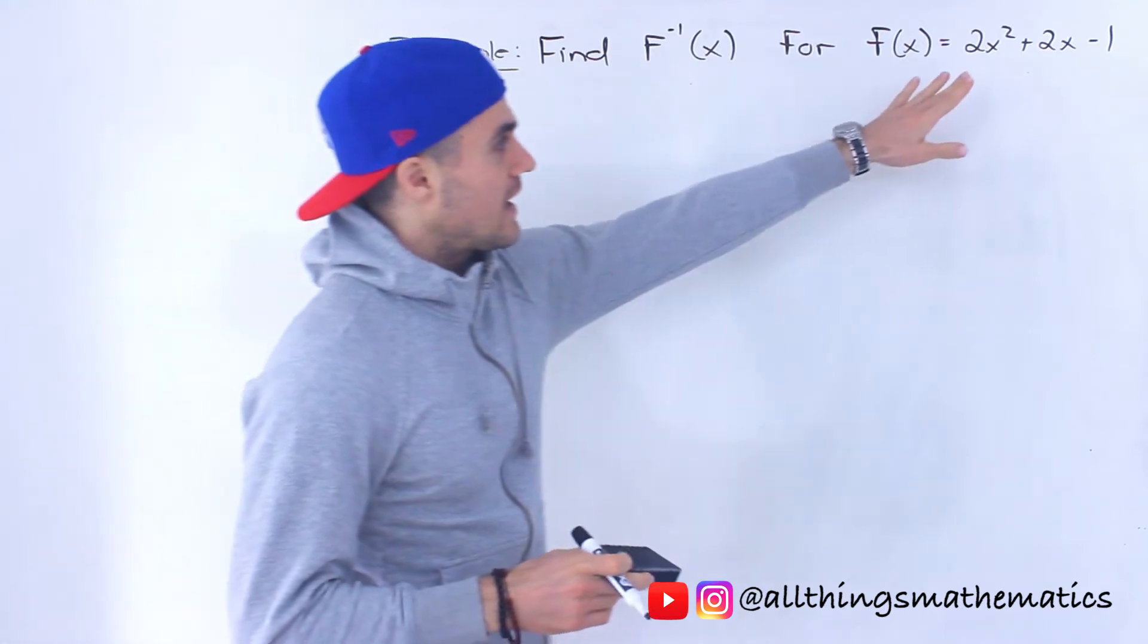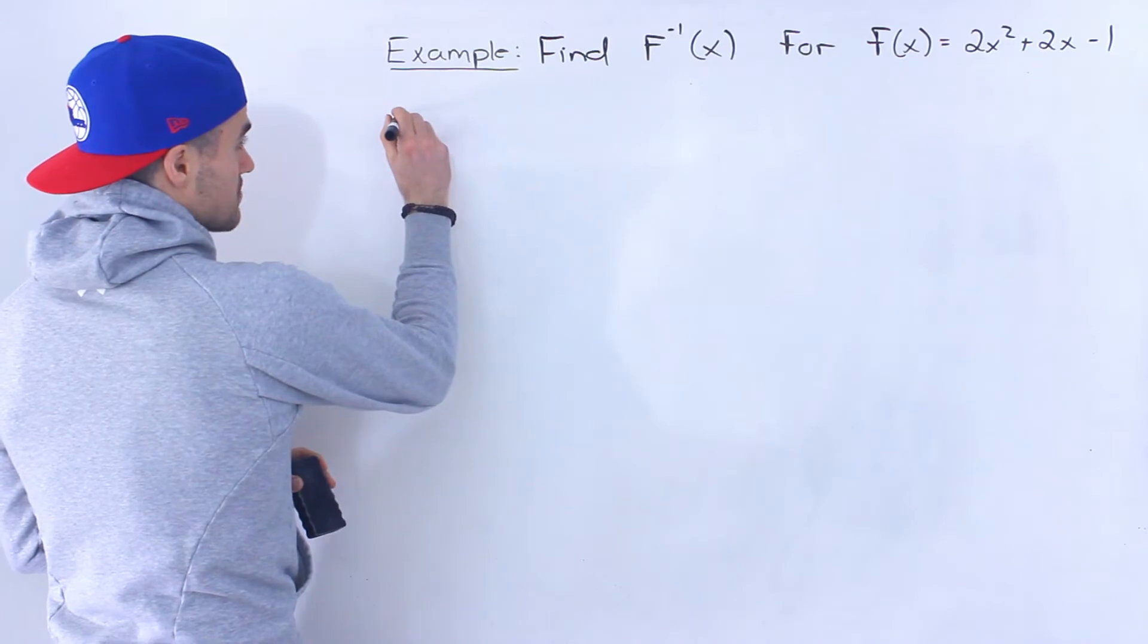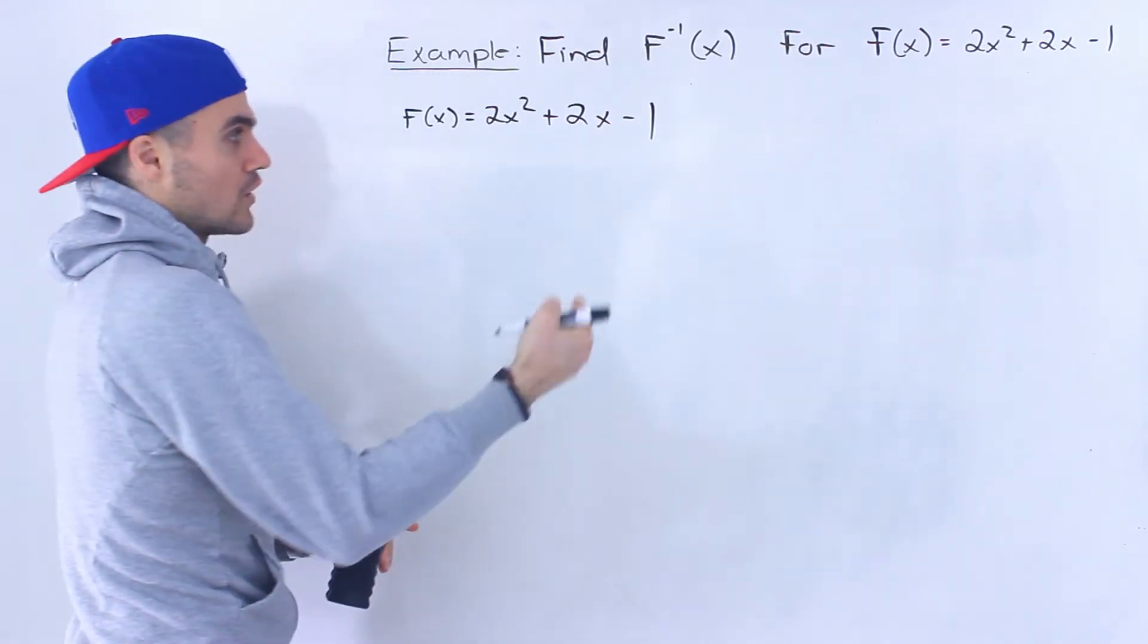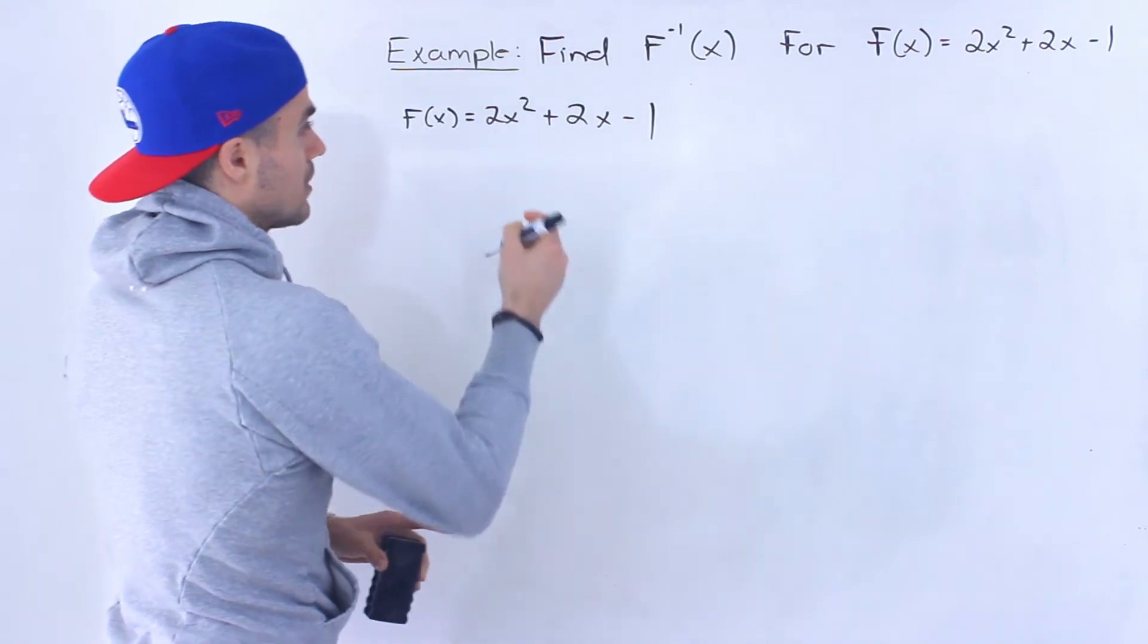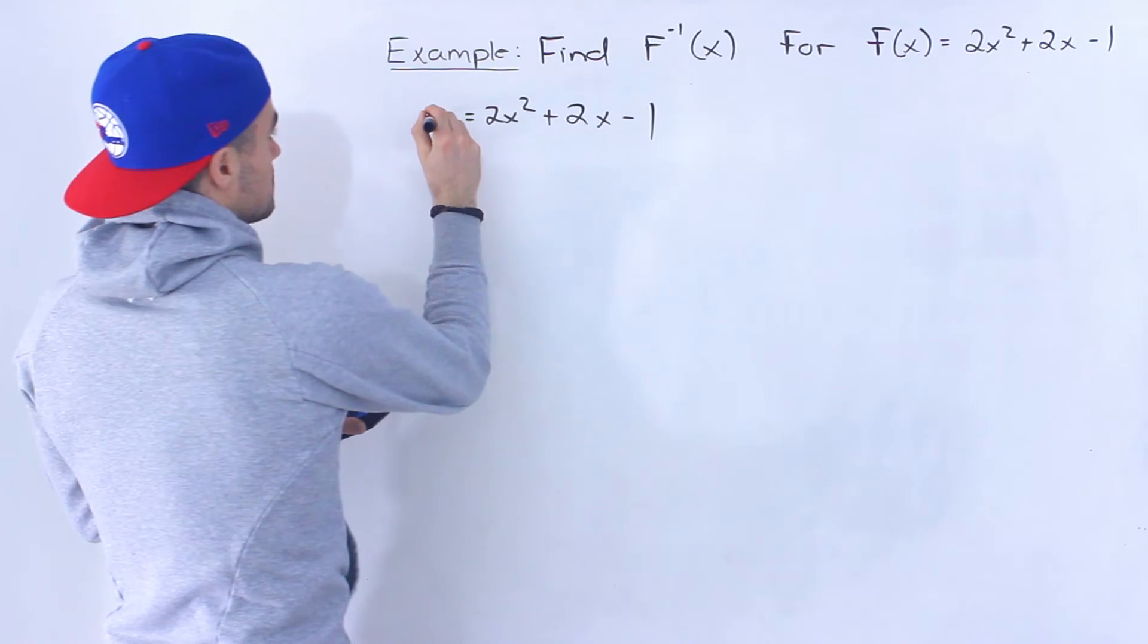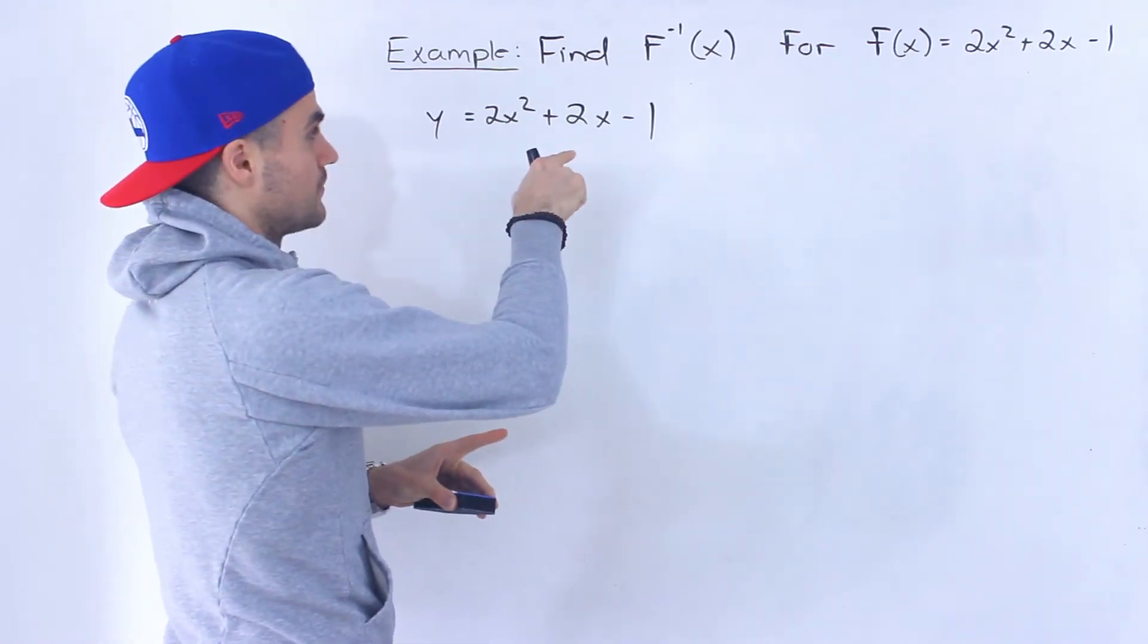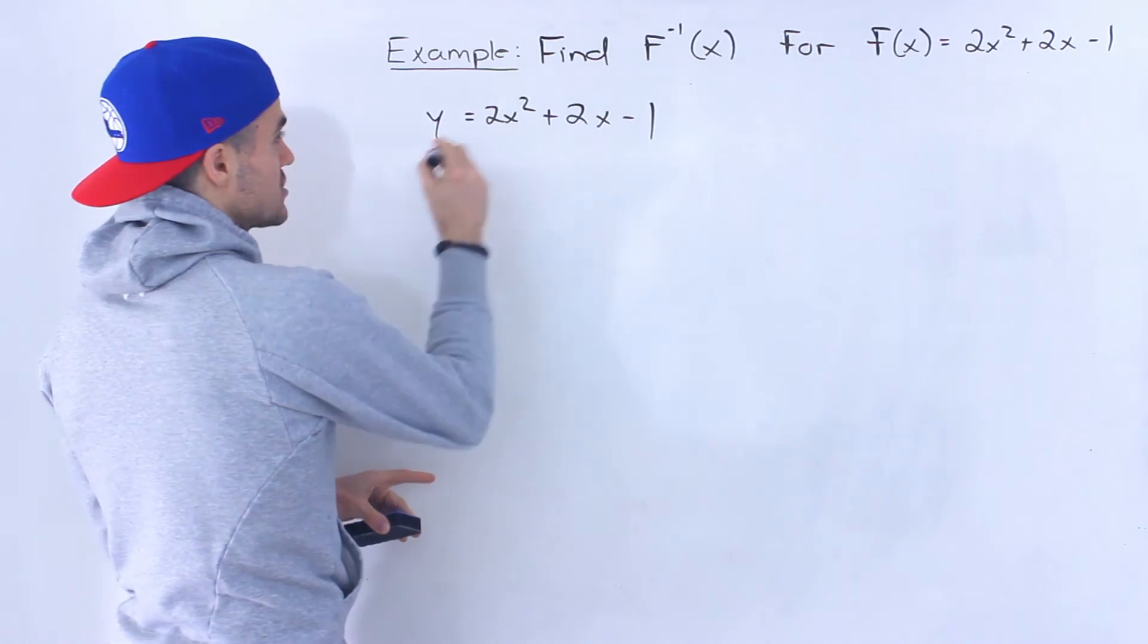So when you get a quadratic like this in standard form, what you've got to do with the quadratic first before finding the inverse is you've got to take that quadratic and convert it to vertex form. You've got to complete the square because right now, instead of putting f of x here, let's put a y. If we were to interchange the x and y, you would have two y's to isolate here. So it'd be tough to isolate for y. So we first have to complete the square on this.